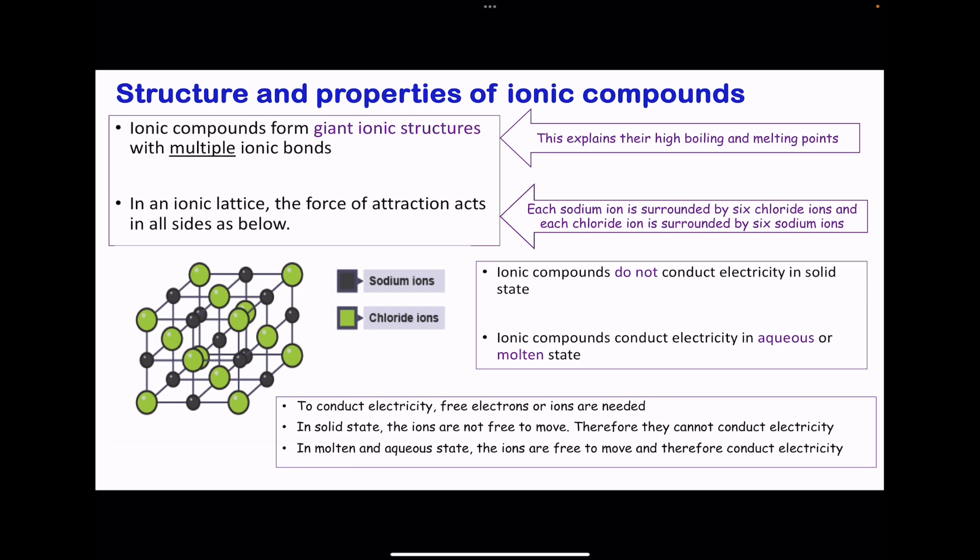Next, we look at the structure and properties of ionic compounds. All ionic compounds are giant ionic structures because they contain multiple ionic bonds. They are in a lattice in an orderly arrangement where many forces of attraction are seen. This is an expanded version of sodium chloride. The presence of multiple ionic bonds explains why they have high boiling and melting points. A lot of energy is required to break down all these multiple ionic bonds.